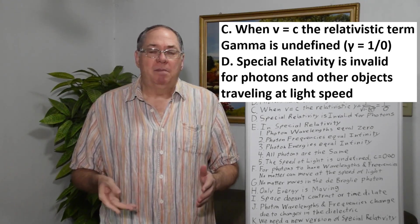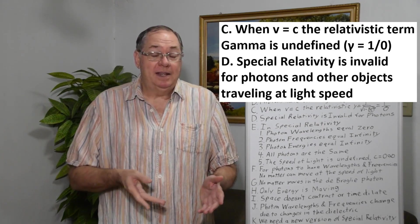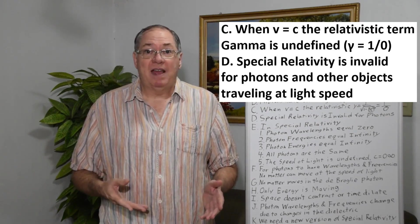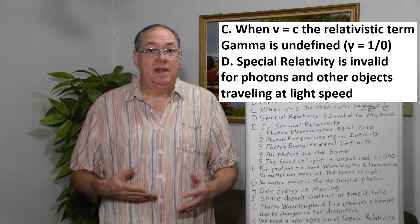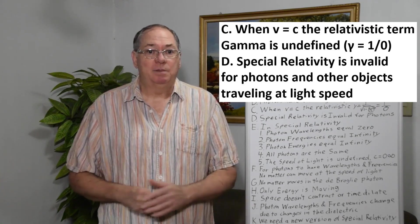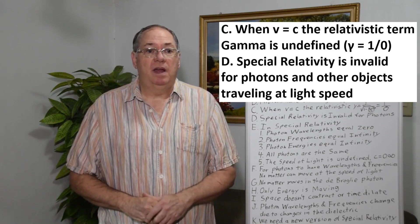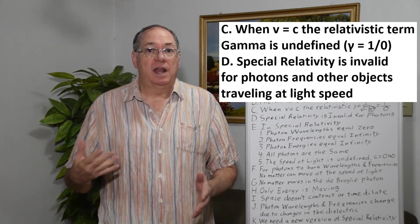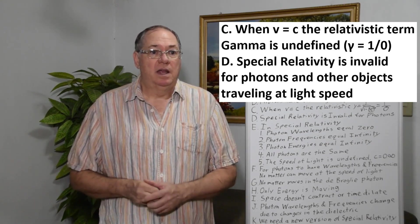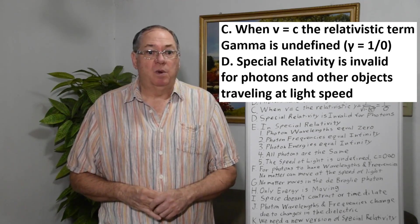So what that basically means is, and he says it, special relativity is invalid for photons or anything else traveling at the speed of light. It doesn't work because it's undefined. We can only use an approximation to try to understand what we get.